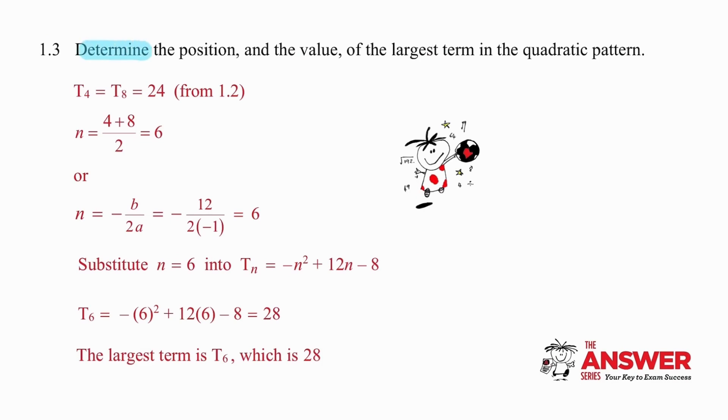In question 1.3 we need to determine the position and value of the largest term in the quadratic pattern. To understand that we need to remember the relationship between a quadratic pattern and the parabola graph. So the first thing that we're going to do is think about the fact that we know from question 1.2 that t4 is equal to t8 and using that information we can work out that there's a line of symmetry when n is equal to 6.